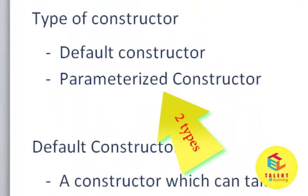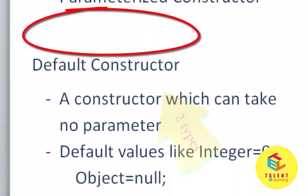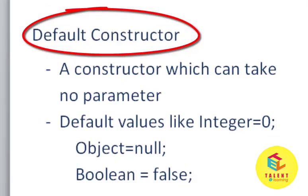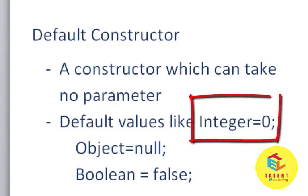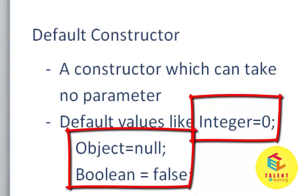There are two types of constructor: default constructor and parameterized constructor. First, default constructor. A constructor which can take no parameter. In default constructor, Java provides some default values like integer is equal to zero. If there is an object which is null, and the boolean default value is false.